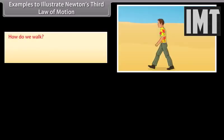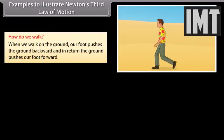How do we walk? When we walk on the ground, our foot pushes the ground backward and in return, the ground pushes our foot forward.